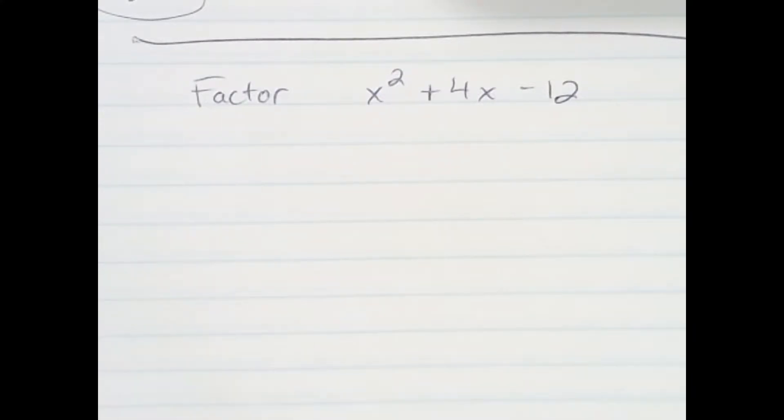All right, so on this one, we're going to factor the trinomial x squared plus 4x minus 12.